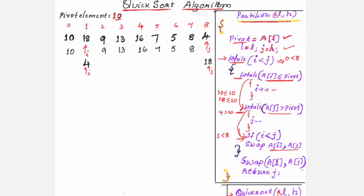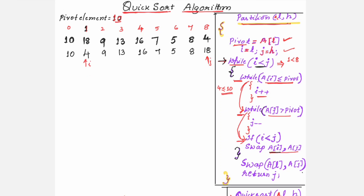Control returns to the outer while loop — I is 1, J is 8, 1 less than 8 is true. A of I is 4, which is less than or equal to 10 — increment I. Now A of I is 9, less than or equal to 10 — increment I again. Now A of I is 13. Whether 13 is less than or equal to 10? No, the condition is false. It exits this while loop and enters the next while loop, checking whether A of J is greater than pivot. A of J is 18, 18 greater than 10 — true — decrement J by 1.